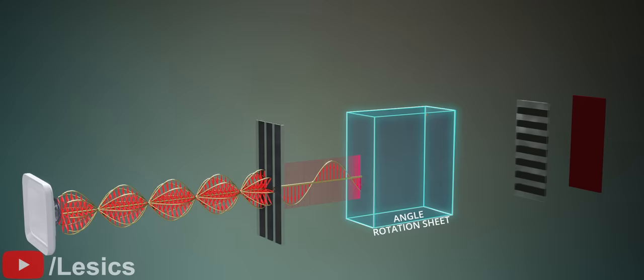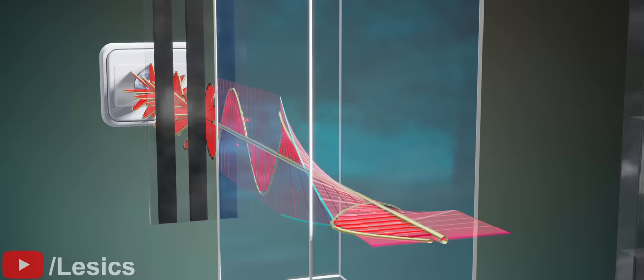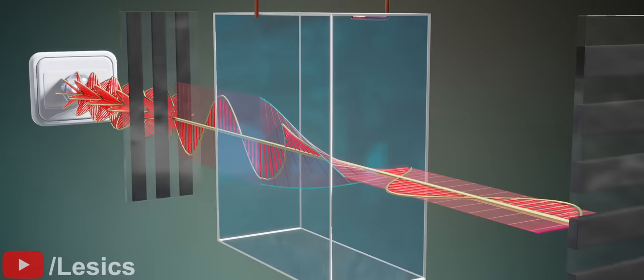When we give a rotate signal to this sheet, it will rotate the vertically polarized light to the angle we want. If this angle of rotation is 90 degrees, the next polarizer layer, the horizontal polarizer, will allow the light to pass through completely.